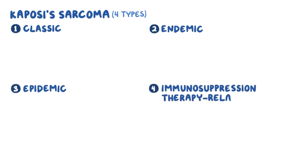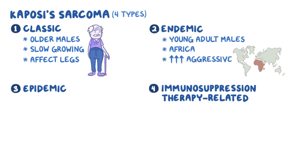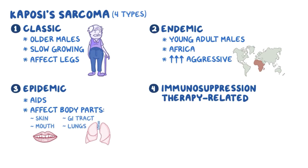HHV-8 causes Kaposi's sarcoma, which is classified into four types depending on the clinical circumstances in which it develops: classic, endemic, epidemic, and immunosuppression therapy-related. Classic Kaposi's sarcoma usually affects older males, it's slow-growing, and it usually affects the legs. Endemic Kaposi's sarcoma occurs in young adult males who live in Africa and can be more aggressive. Epidemic Kaposi's sarcoma is associated with AIDS and can affect many body parts, such as skin, mouth, GI tract, or lungs. Finally, immunosuppression therapy-related Kaposi's sarcoma affects the skin and usually develops following organ transplantation.